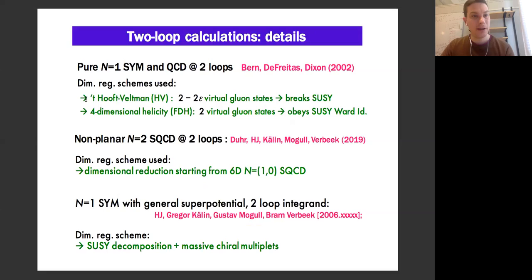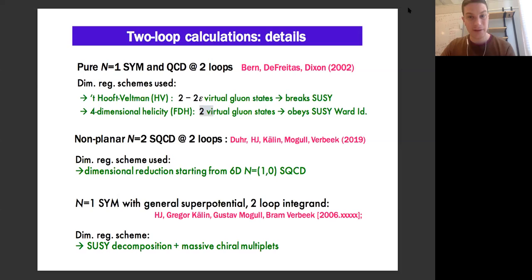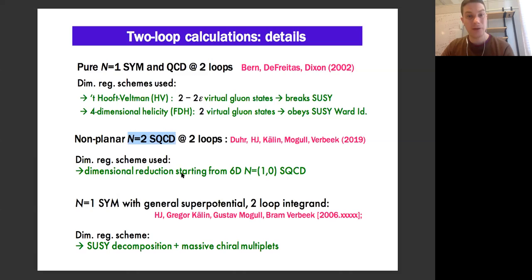Let me say something about this 2002 calculation by Bern and Lance. They did the calculation both in the two-dimensional-envelopment scheme — where virtual gluon states are two minus two epsilon, which breaks supersymmetry — and in the four-dimensional helicity scheme, which keeps only two virtual gluon states. The four-dimensional helicity scheme actually obeys SUSY Ward identities. I don't know if that's an accident of the simplicity of the result, or whether it can be generalized to higher multiplicity at two loops or higher loops.